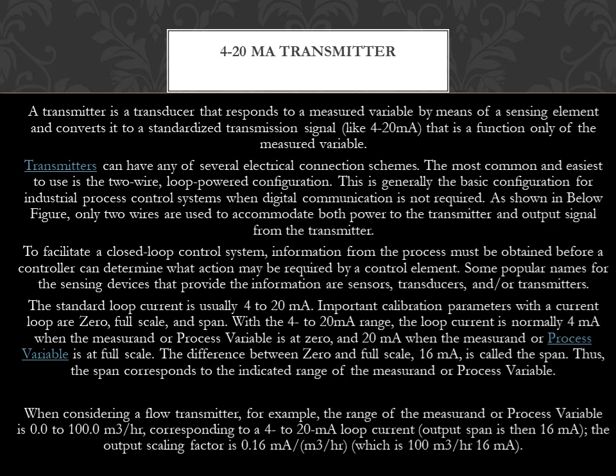The standard loop current is usually 4-20mA. Important calibration parameters with a current loop are 0, full scale, and span. With the 4-20mA range, the loop current is normally 4mA when the measurand or process variable is at 0, and 20mA when the measurand or process variable is at full scale. The difference between 0 and full scale, 16mA, is called the span.